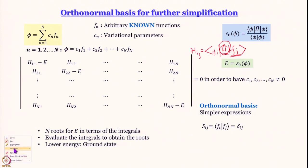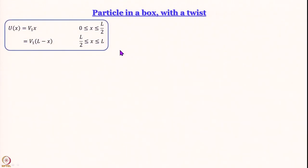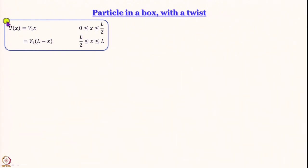We keep h_{ij} for now and set S_{ij} = 0 for i ≠ j, giving us the simplified secular determinant. We now return to particle in a box with a twist: the potential energy is not zero inside. For 0 ≤ x ≤ L/2, the potential is V(x) = V₁x, where V₁ is a constant.